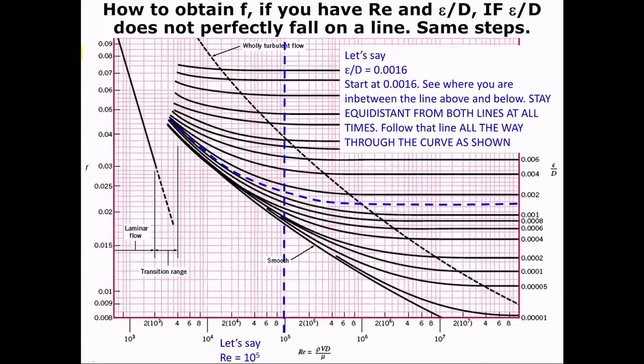Now, let's say something a little more complicated. So let's start with the same Reynolds number, 10 to the fifth. But in this case, we're going to say our relative roughness is 0.0016. So you're actually going to be in between these ranges, this range here. So you're not quite halfway point, you're a little above it.